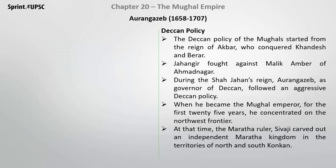Now let's understand the Deccan policy. The Mughal Deccan policy started from the reign of Akbar, who conquered Khandesh and Berar. Jahangir fought against Malik Ambar in Ahmednagar. During Shah Jahan's reign, Aurangzeb served as Deccan's governor, and an aggressive Deccan policy was adopted.